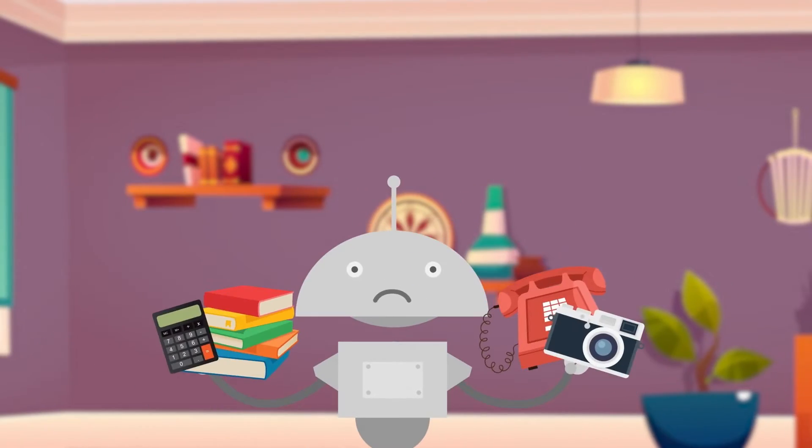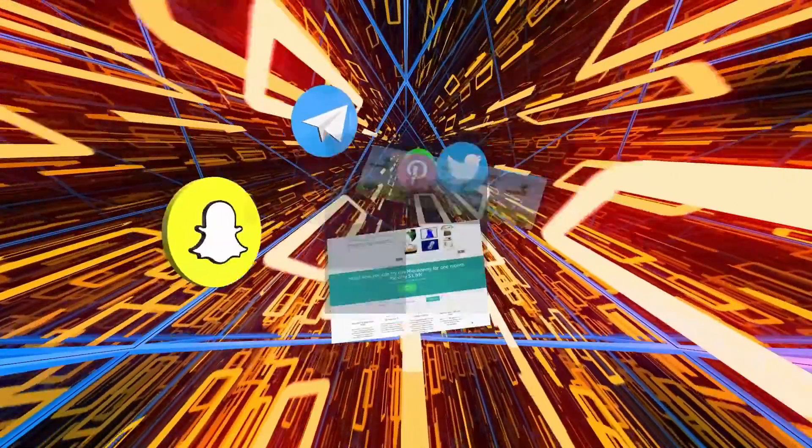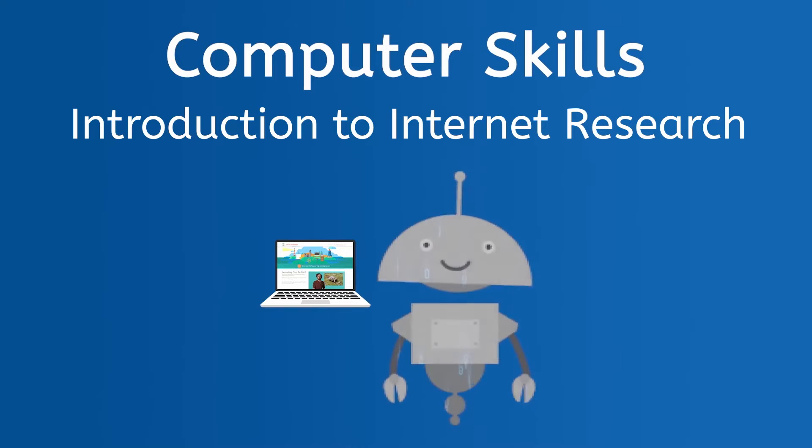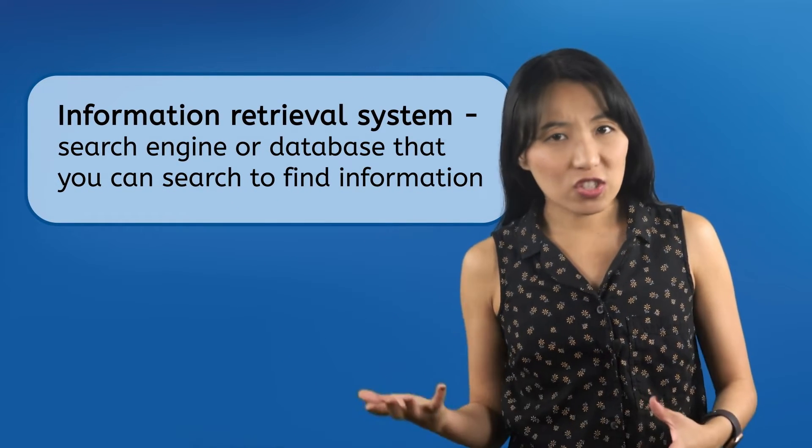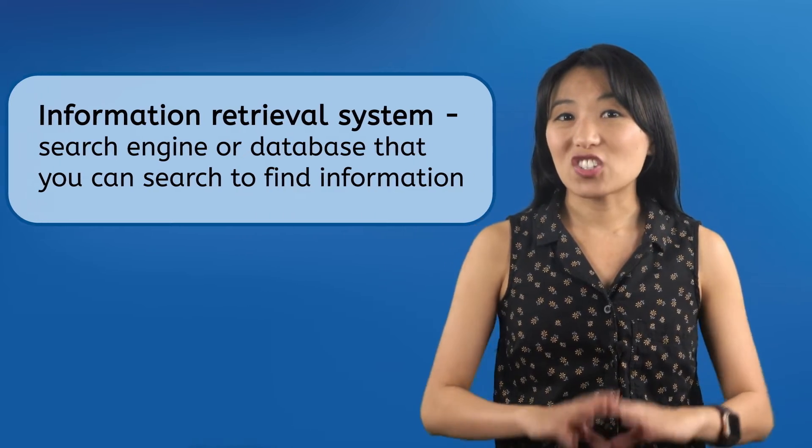By the end of this unit, you'll be a pro at internet research and the world of knowledge will be yours to explore. People who are just starting to research on the web make lots of mistakes, and the lessons in this unit will teach you the best ways to conduct internet research. You'll typically conduct your search using an information retrieval system — a search engine or database that you can search to find information on any subject imaginable.